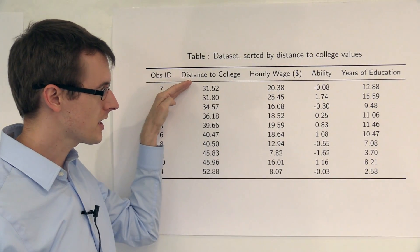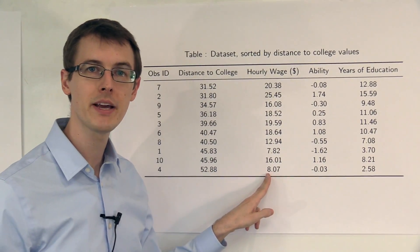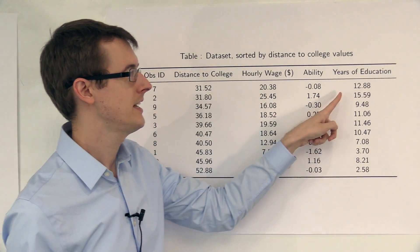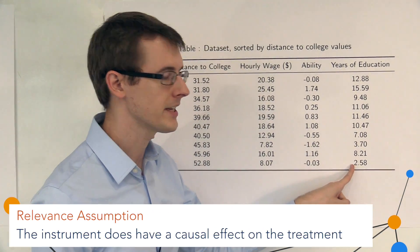...the people who live close to college tend to make more money, whereas the people who live farther from college tend to make less money. We also see that people who live close to college tend to get more education, whereas people who live far from college tend to get less education.